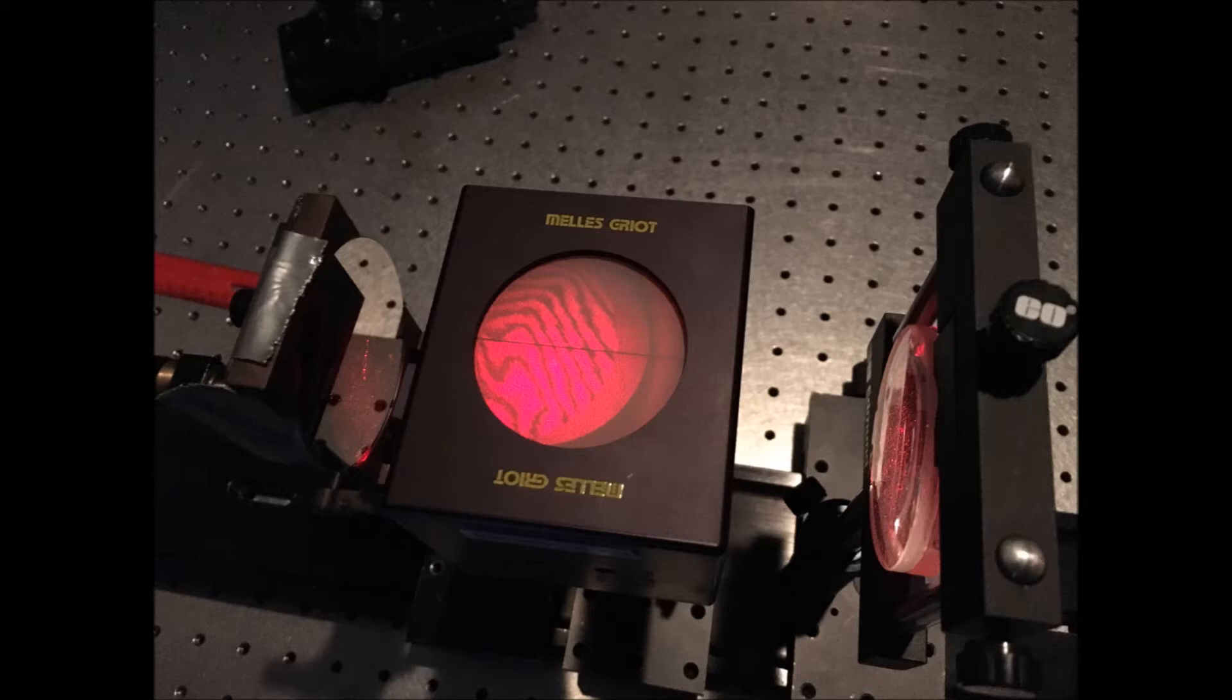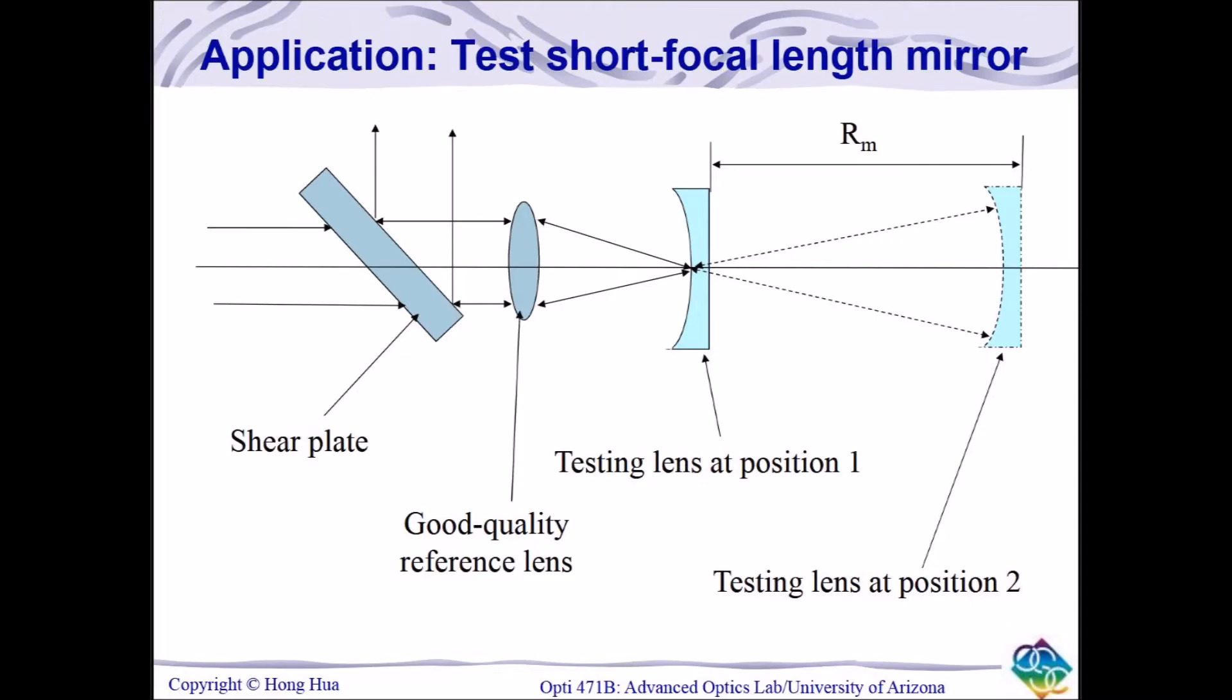However, there are only two locations where fringes will be observed as the other locations would not produce collimated light returning into the system. As shown below, the focal point of the reference lens as well as the location where the testing mirror is at its radius of curvature are where the fringes will be produced. The difference of the two locations result in the radius of the mirror.